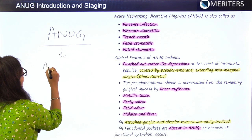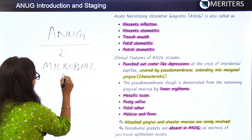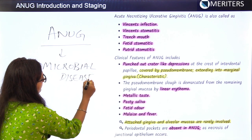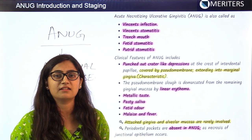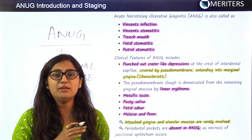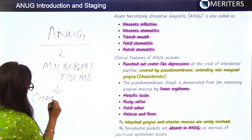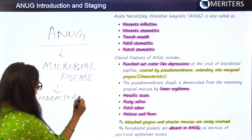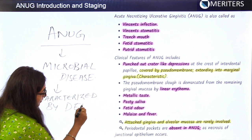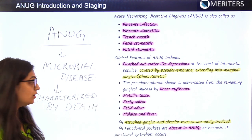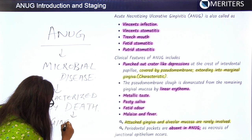ANAG, or acute necrotizing ulcerative gingivitis, is a microbial disease in the host where immunosuppression has occurred — a context where immune response is not proper. It is a serious condition where death can also occur, and gingival sloughing is seen.